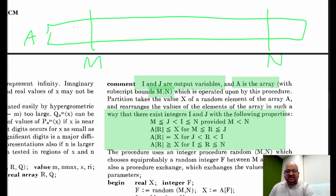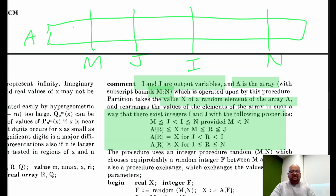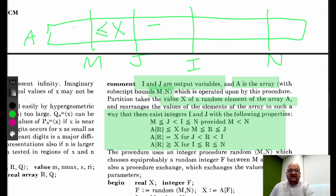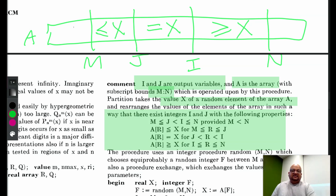At the end of the partition procedure, we want j to be greater than or equal to m, we want i to be greater than j, and i to be less than or equal to n. At the very beginning we pick x to be a random element within this array, and we want the partitioning to work such that all elements between m and j are less than or equal to x, the ones between j and i are equal to x, and the ones between i and n are greater than or equal to x. So the partition process picks a dividing line somewhere in the array and moves all elements less than the element at that dividing line to one side and all elements greater than it to the other side.